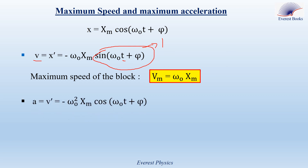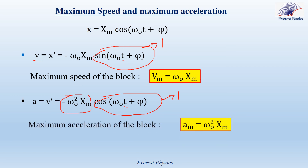Similarly, the algebraic acceleration is the first derivative of v, giving a equals minus omega 0 squared xm cosine(omega 0 t + phi). The maximum value of cosine is 1, so the maximum acceleration am equals the absolute value of minus omega 0 squared xm, which gives am equals omega 0 squared xm.